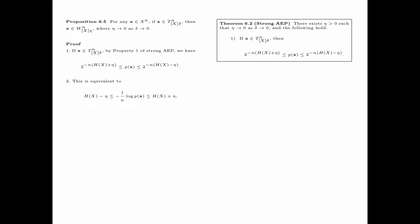The formal proof goes as follows. If x is strongly delta-typical, by property 1 of strong AEP, we have the probability of the sequence x lower bounded by 2 to the power of minus n times the entropy of x plus eta, and upper bounded by 2 to the power of minus n times the entropy of x minus eta. By taking the logarithm and multiplying by minus 1 over n, we have minus 1 over n times log of p(x) — that is, the empirical entropy of the sequence x — lower bounded by entropy of x minus eta, and upper bounded by entropy of x plus eta, where eta tends to 0 as delta tends to 0, as asserted by the strong AEP.